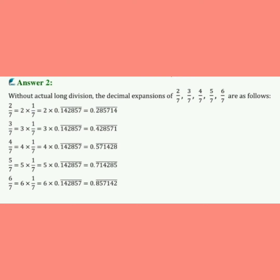अब last term है 6/7। 6/7 = 6 × (1/7)। 1/7 की जगह question में given decimal value रखी: 6 × 0.142857 bar। 6 का multiply करने पर answer आता है 0.857142 bar।